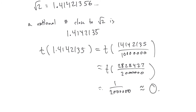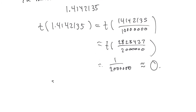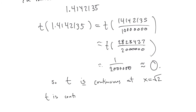That means T is continuous at x = √2. Very weird, because the graph looks so crazy it doesn't look like it should be continuous anywhere — but it is continuous at x = √2. And there's nothing special about root 2 here. So T is continuous at every x which is not rational, and it is discontinuous at every rational. This is the wonderful thing about Thomae's function.